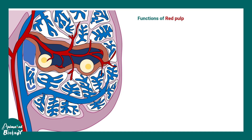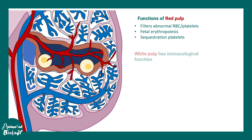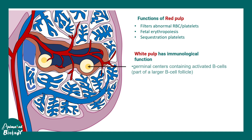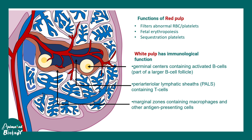The red pulp filters abnormal RBCs and platelets, is a zone for fetal erythropoiesis, and sequesters platelets — so red pulp has hematological functions. Whereas the white pulp has immunological functions: you can see germinal centers present in the B cell follicles, the peri-arteriolar sheath which has T cells, and the marginal zone which has antigen presenting cells.